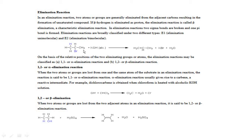Why is it called a beta elimination or 1-2 elimination reaction? Because in this, there is a removal of a group from the adjacent carbon. If there is removal of a group from the same carbon, then it is known as alpha elimination. In beta elimination, removal takes place from the adjacent carbon. In elimination reaction, two sigma bonds are broken — such as C-H and C-Br, both sigma bonds — and one pi bond is formed between carbon and carbon.